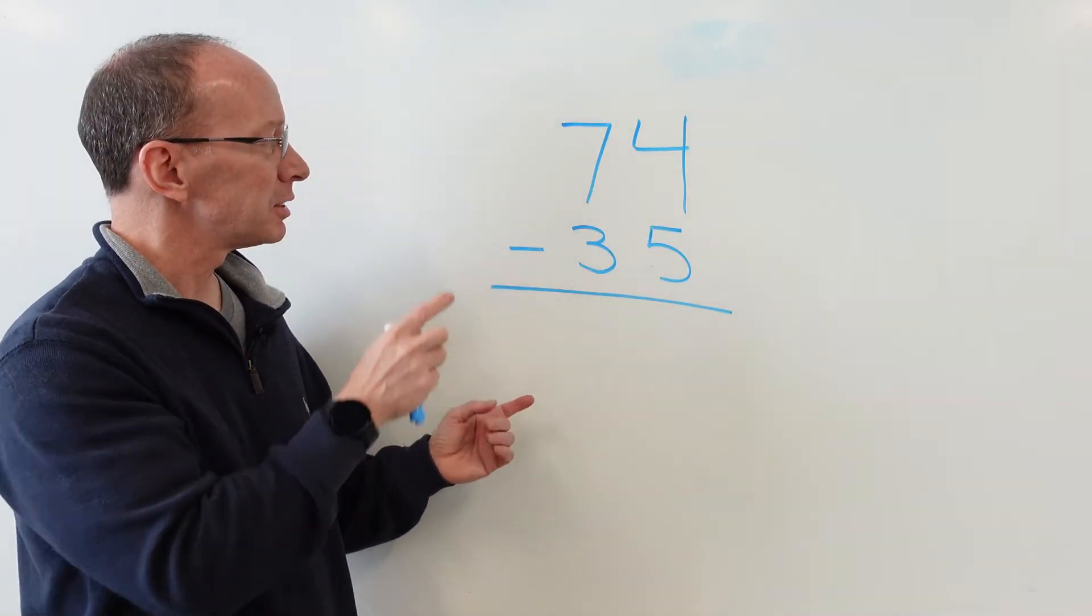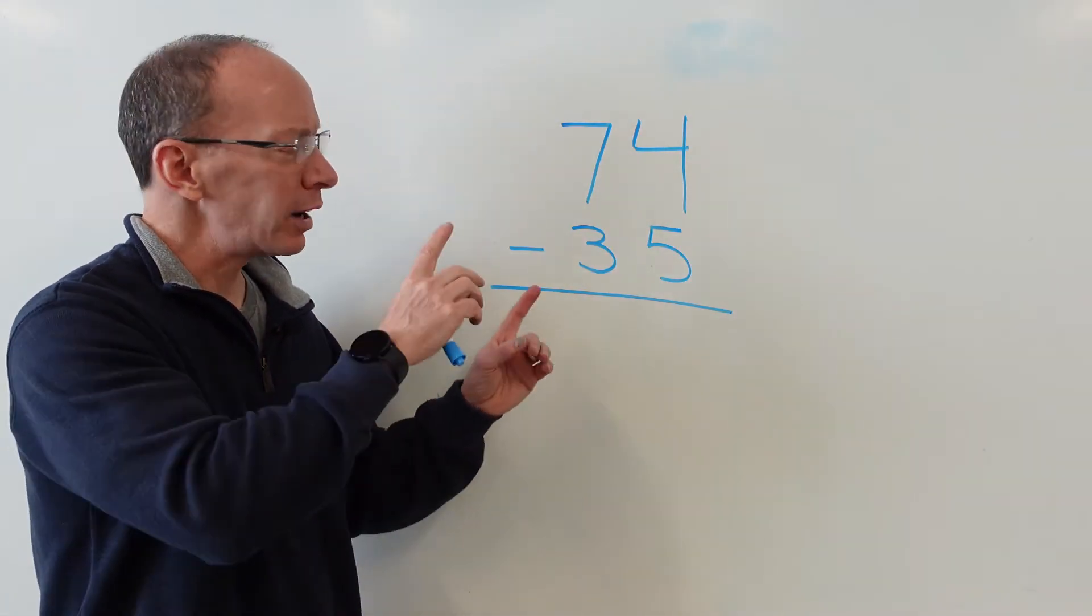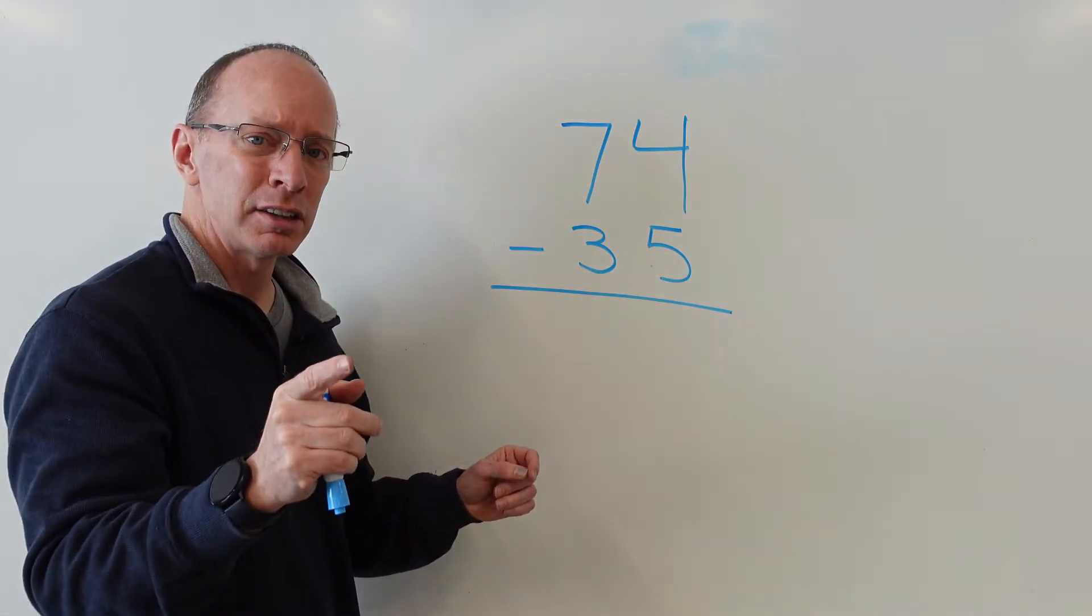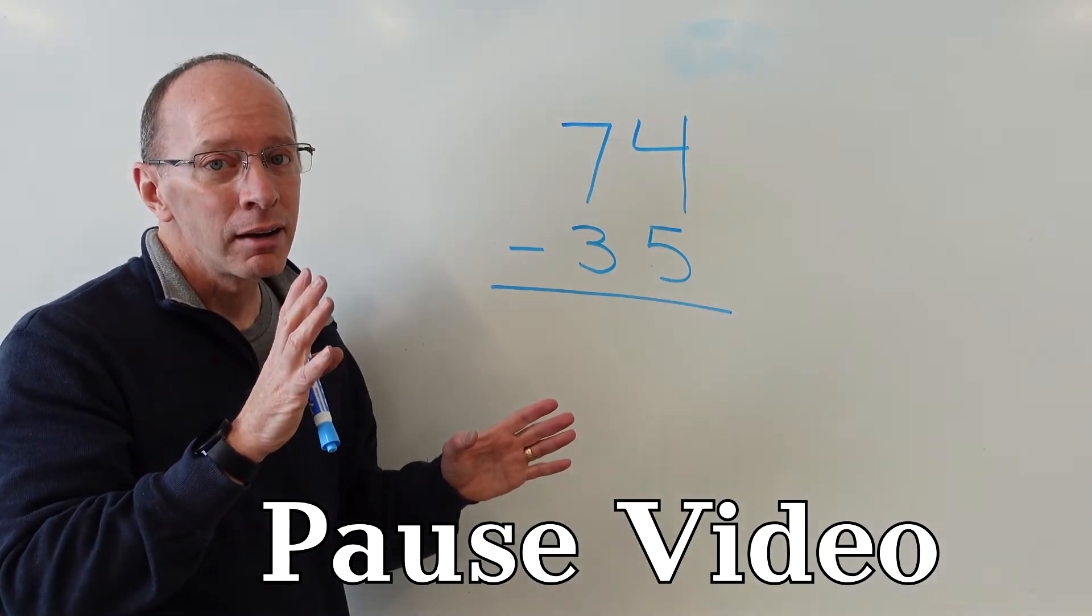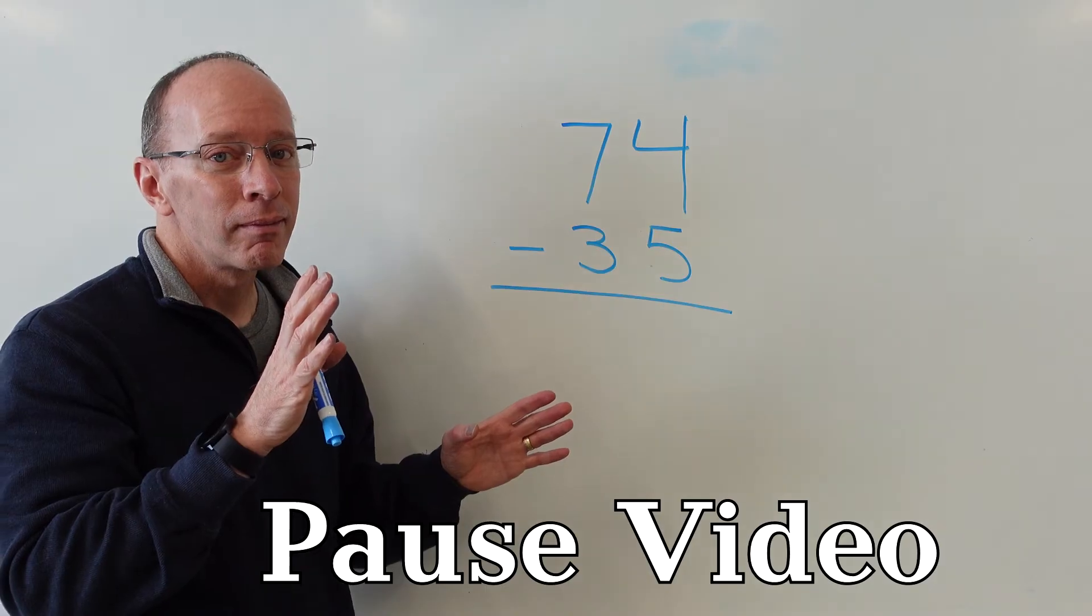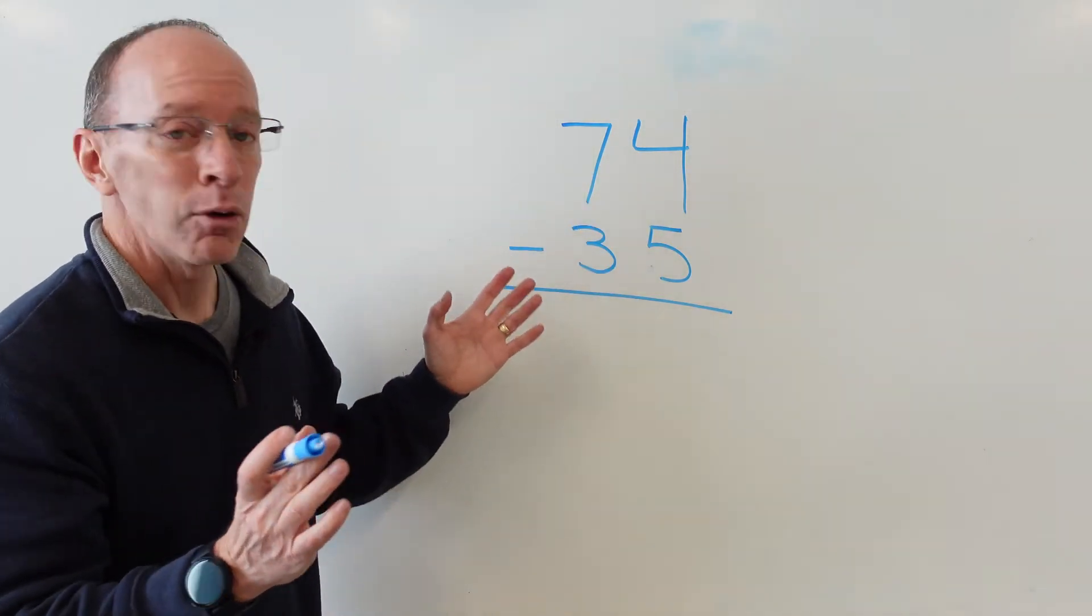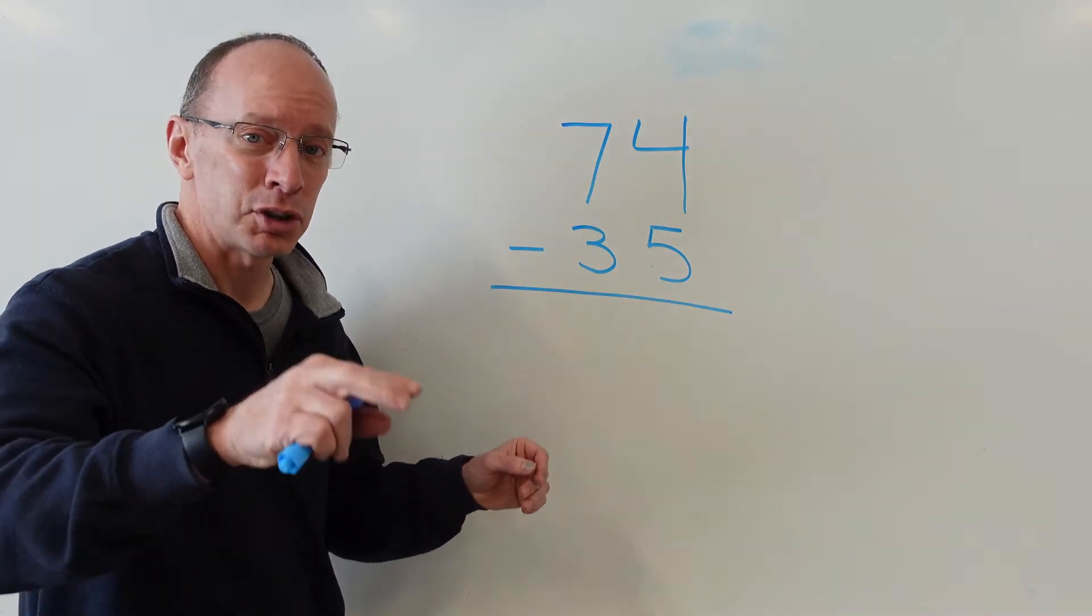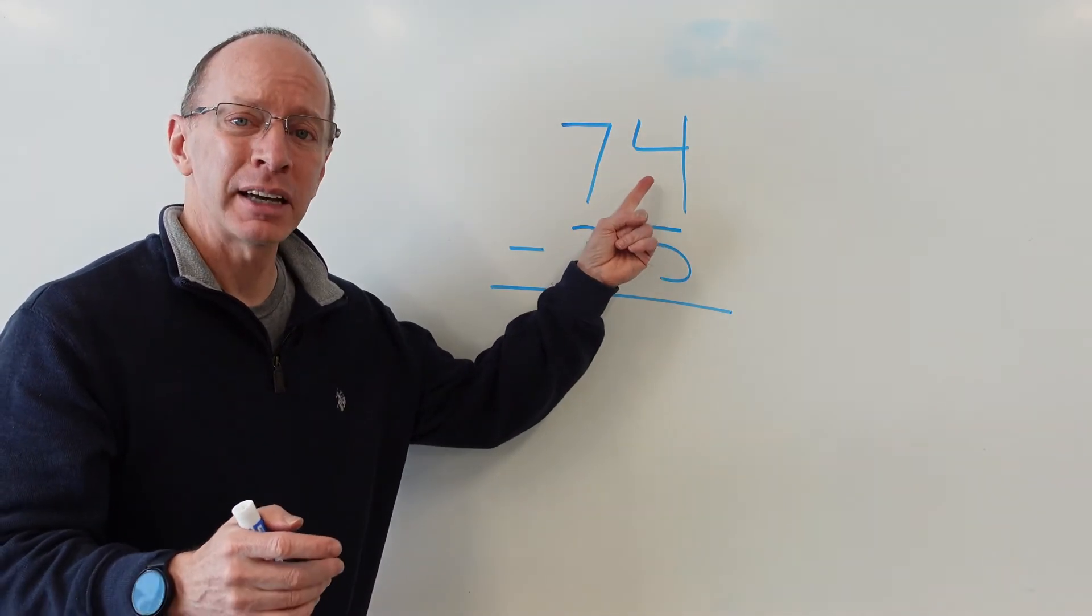Here we have our problem: 74 minus 35. What I want you to do right now is go ahead and do this problem. Hit pause, and when you're ready to begin again, hit play. Alright, here we are. Now, what do we do? Remember, subtract the ones first. Can we do it? Is this number up here big enough?